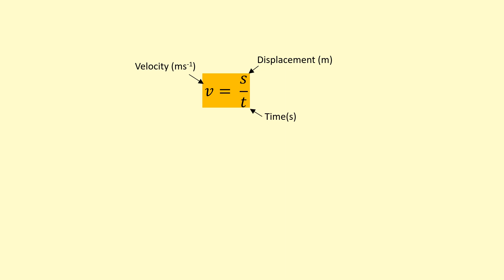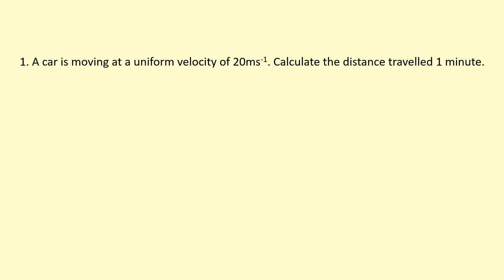Technically, the equation is more accurate when written as change in displacement over change in time. Example 1: a car is moving at a uniform velocity — that means constant speed and constant direction — of 20 meters per second. Calculate the distance traveled in one minute.